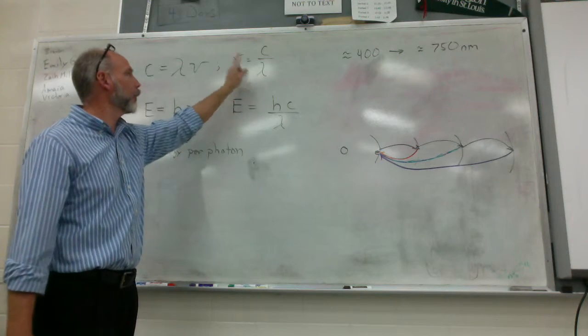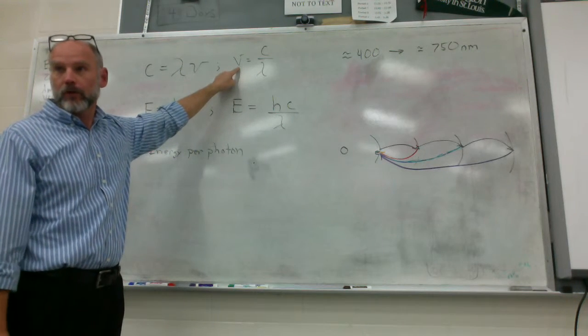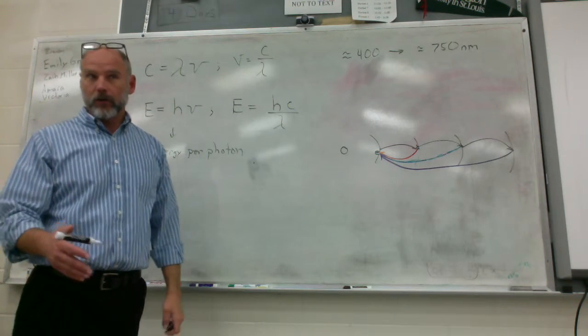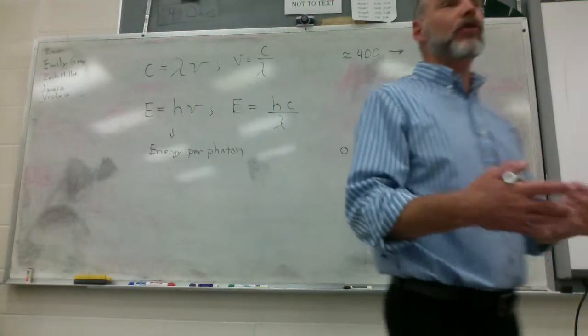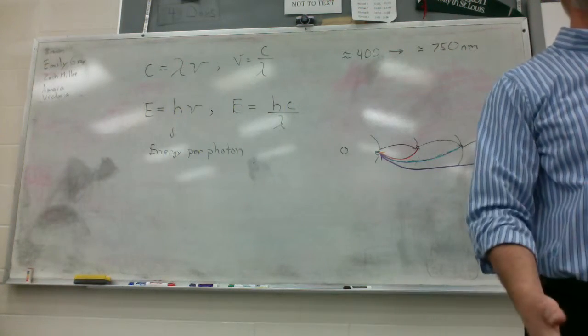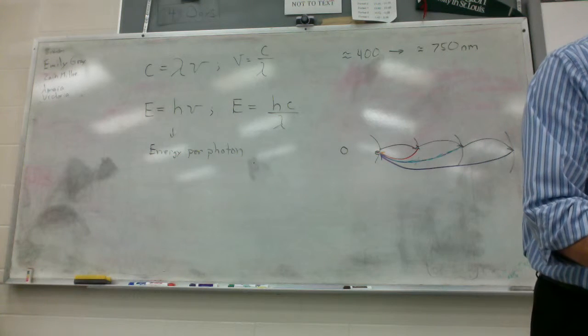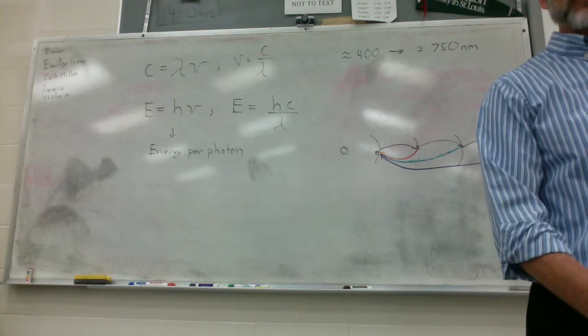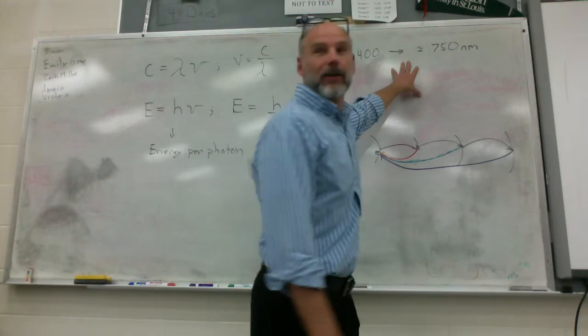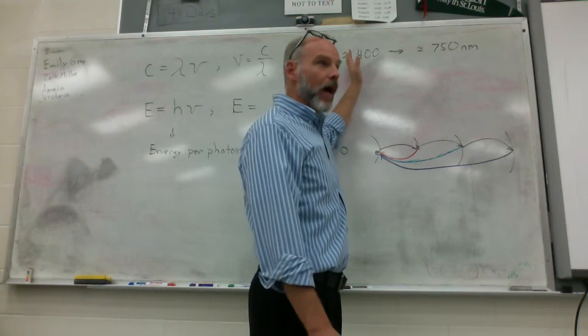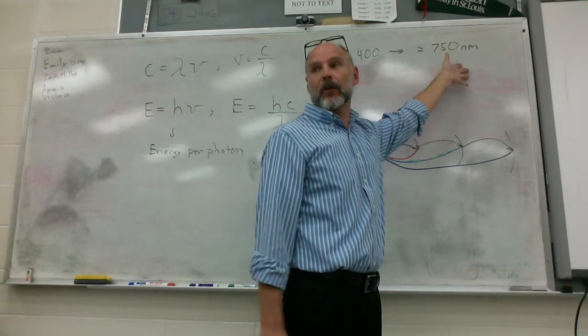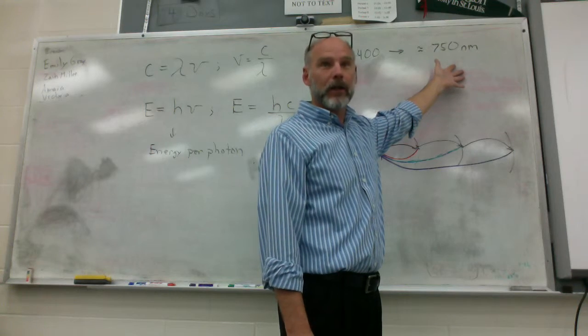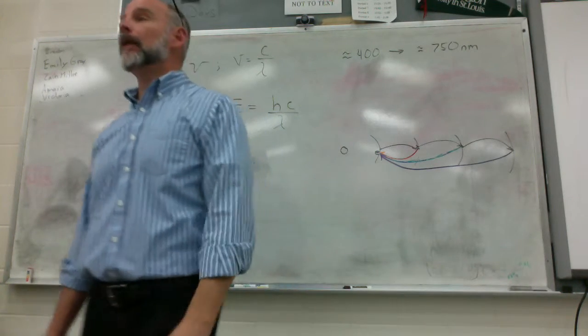Does anyone remember this constant? Six point six two six times ten to the negative thirty four joule seconds. So, we have seconds in there. Does anyone remember what the unit for nu was? Hertz. Hertz, which means one over one second. So, what units, when we're using these equations, what do our distances have to be measured in? To use the equations, our distances have to be measured in meters and our time is going to have to be measured in seconds.